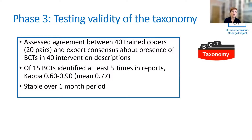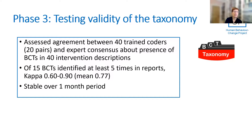For validity, we looked at agreement between 40 trained coders, working in 20 pairs, between them and an expert consensus — which was the research team — about the presence of behaviour change techniques in 40 intervention descriptions. Of the 15 that were identified at least five times, we looked at the CAPA and had a mean of 0.77. So there was good agreement between the trained coders and the experts, and this was stable over a one month period.